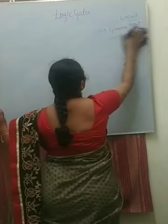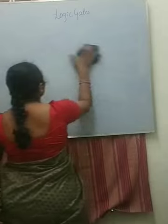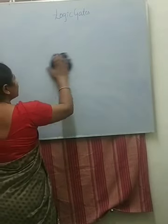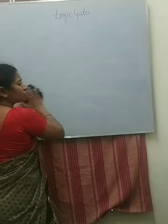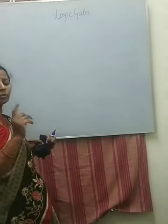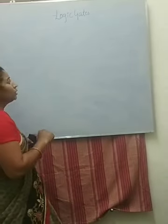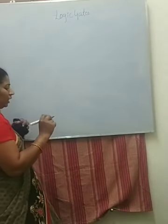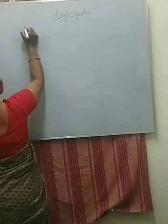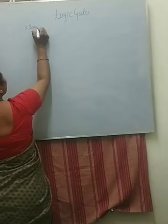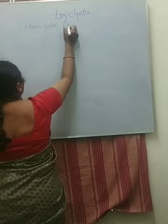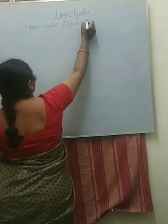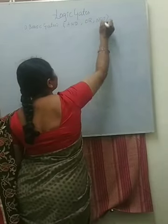First we will discuss basic gates. A gate is a basic electronic circuit which accepts one or more input signals to produce a single output. The basic gates are AND, OR, and NOT — these three belong to basic gates.